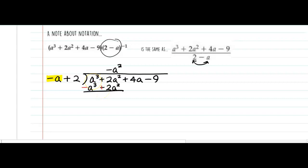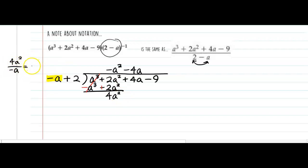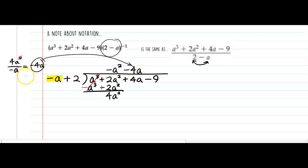a times a squared gives me a to the third, but I need to cancel out the negative so it needs to be negative a squared. Negative a squared times negative a is positive a cubed — these need to match. Negative a squared times 2 is negative 2a squared. Now I change the signs of everything I just wrote. a to the third minus a to the third cancels. 2a squared plus 2a squared is 4a squared. Now I'm thinking: negative a times what gives me 4a squared? The answer is negative 4a.